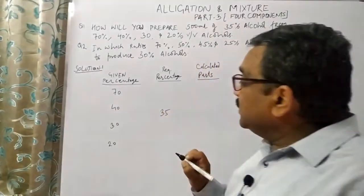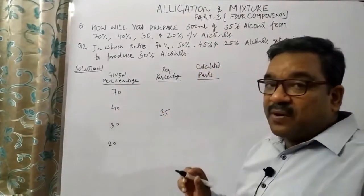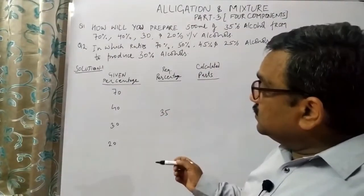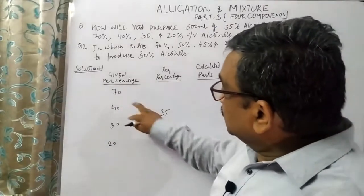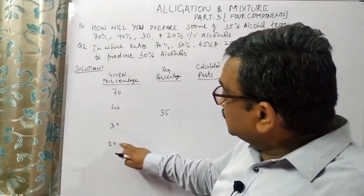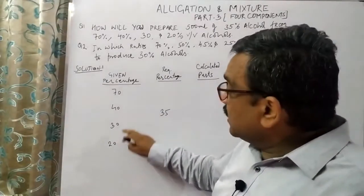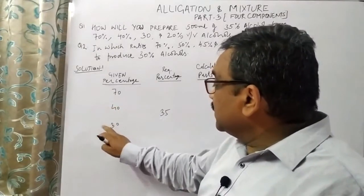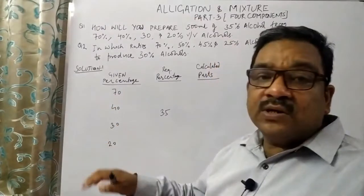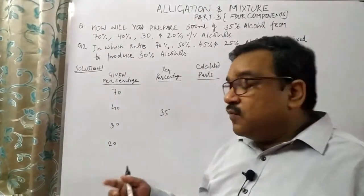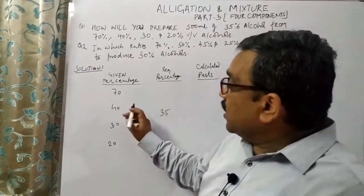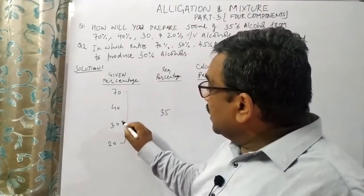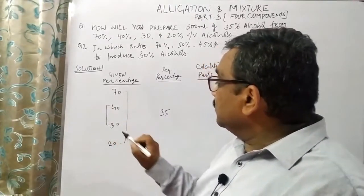The next important part is we have to choose a perfect combination. There are four different types of combinations. One combination is 70 and 20. Another is 70 and 30. Another is 40 and 30, and 40 and 20 combinations. It depends upon you which combination is taken. I am taking the 70 and 20 combination, and the 40 and 30 combination.